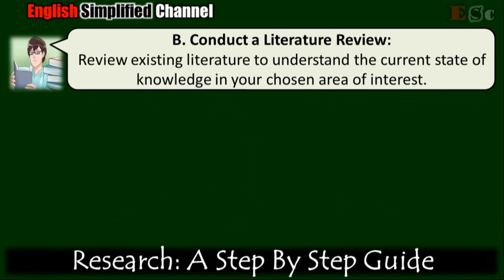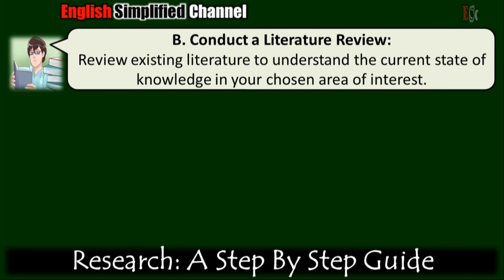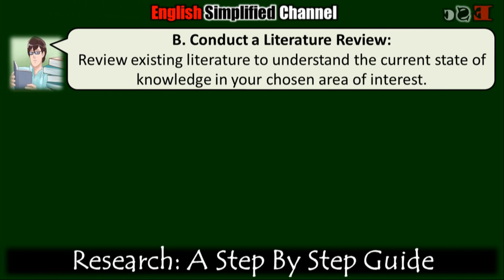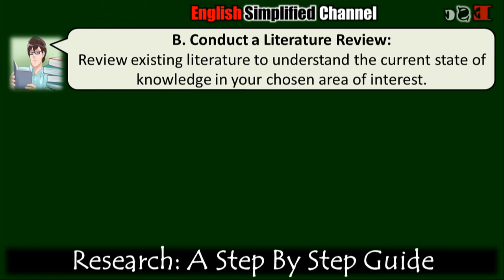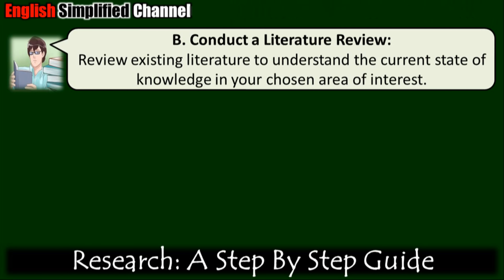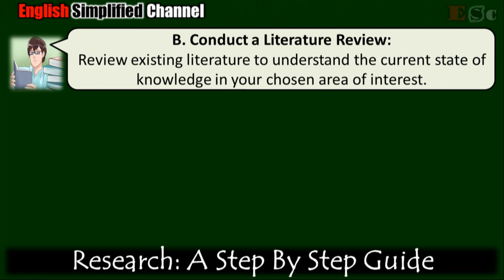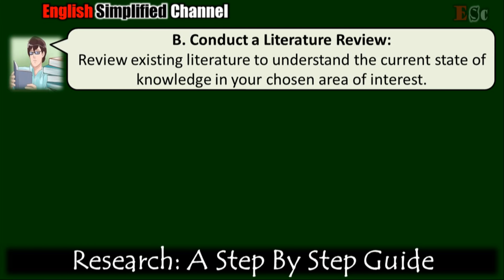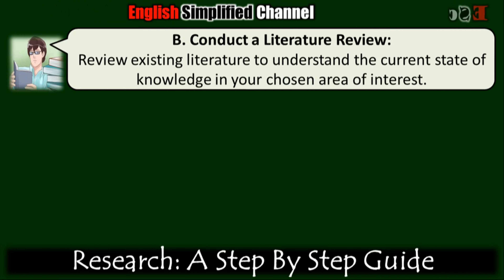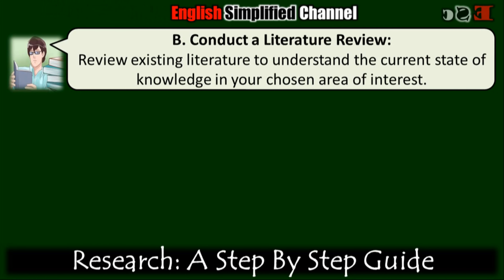Step b: Conduct a literature review. Review existing literature to understand the current state of knowledge in your chosen area of interest. Identify key concepts, theories, methodologies, and findings from relevant studies. Pay attention to gaps, unanswered questions, or areas where further research could contribute new insights. Take notes and organize your findings to inform the development of your research question.